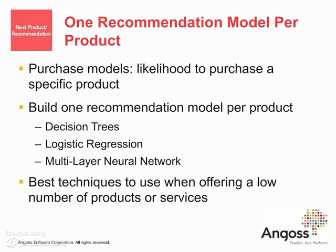For each product you want to recommend, you build a propensity model. A propensity to purchase model calculates the likelihood that a customer will purchase a product or service offering. The likelihood of purchase for each product can be modeled in different ways. Models that can be used include decision trees, logistic regression, and multilayer neural network. No model is decidedly better than another — model performance will depend on the type and quality of data available. Building individual models for each product is best when there are a small number of products. In cases where there are many offerings, market basket analysis is the best method to use, and this technique will be discussed in a future module.